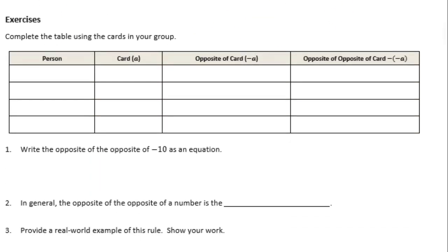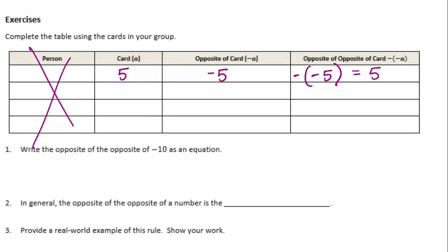Complete the table using some example numbers. Starting with positive 5: the opposite of 5 is negative 5, and the opposite of the opposite — the opposite of negative 5 — equals 5. Two negatives cancel each other out and give us a positive.